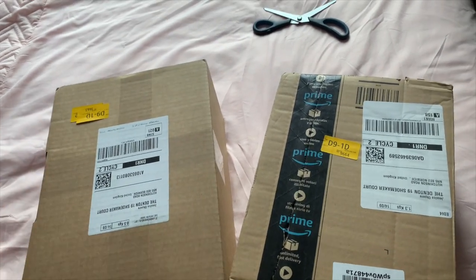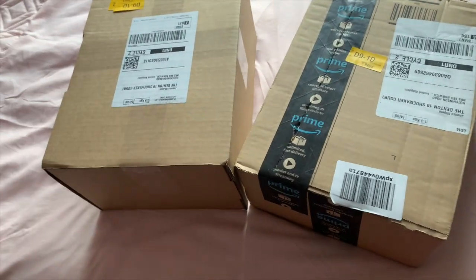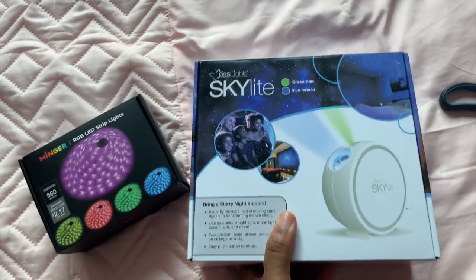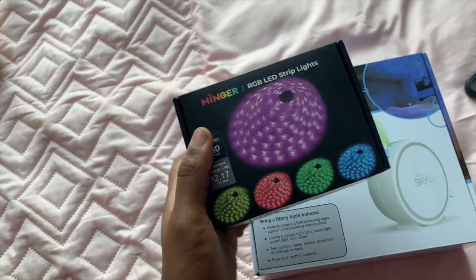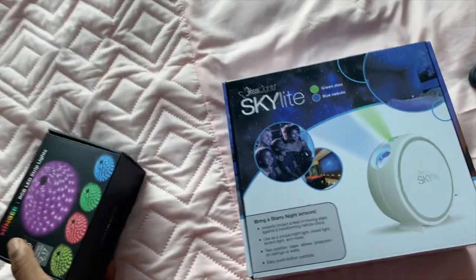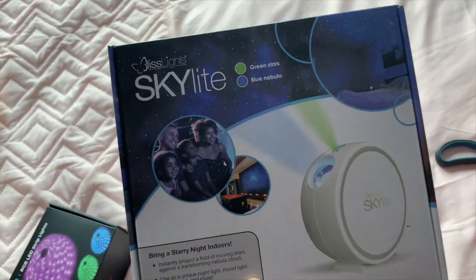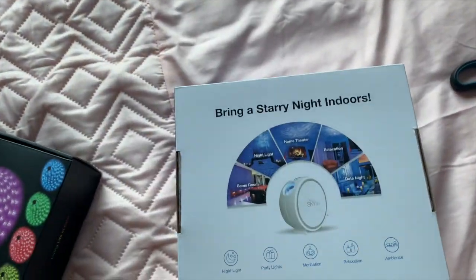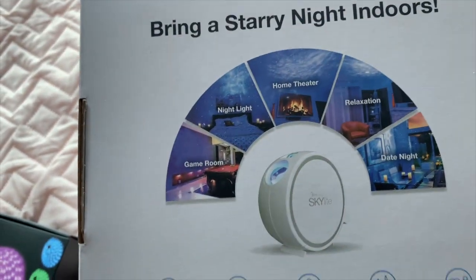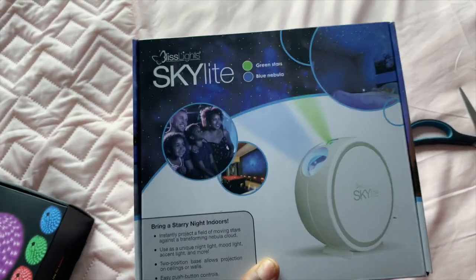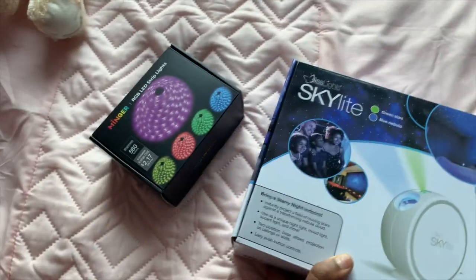Two boxes came for me today — let me open them and show you. This is the continuation of my LED strip lights and my galaxy projector, which is supposed to show a starry night sky on your ceiling. I find that really cool and I'm really excited to set it up.